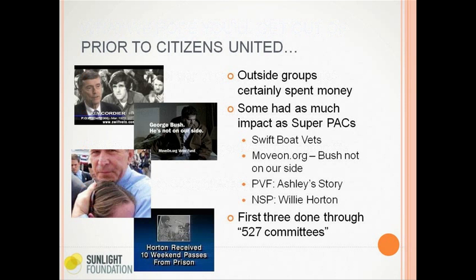These were 527 committees — regular political committees. They disclosed their donors to the IRS and were limited in what they could do. The other thing to remember about 2004 is that a lot of these groups got in trouble. Around 2006 the FEC investigated them. Swift Boat Vets was fined hundreds of thousands of dollars. MoveOn was fined hundreds of thousands of dollars. Some other groups on the Democratic side faced hefty fines. Even some donors received FEC letters asking about their intent — whether they were trying to defeat George W. Bush or John Kerry — which those donors didn't like.